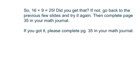So, sixteen plus nine, nine is the one we're adding in there, sixteen plus nine equals twenty-five. That would be five times five equals twenty-five. Do you get that? If you don't, go back to the previous few slides and try it again. Then complete page thirty-five in your math journal to make sure that you're understanding it. That's your practice page. If you got it right away, complete page thirty-five in your math journal so that we can see you've put it into practice, and we will be talking about those in the lesson tomorrow. Have a great night.